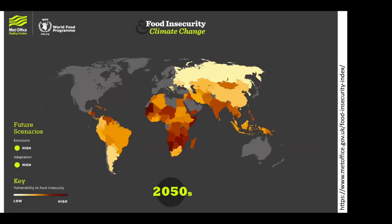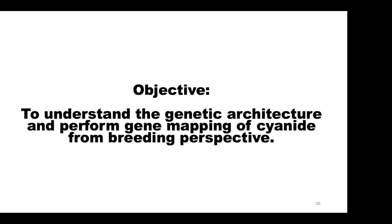The World Food Program predicts that food insecurity resulting from climate change is going to hit hardest in Africa, meaning there will be reduced crop yields and people will depend more on crops like cassava for subsistence. In view of this, what this study tries to do is to understand the genetic architecture and map the trait from a breeding perspective — providing a tool or diagnostic that breeders can use to breed for this trait.